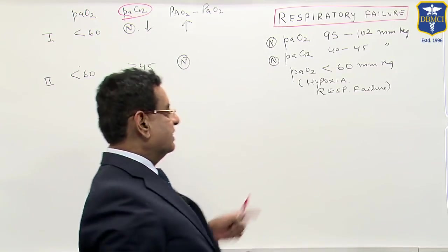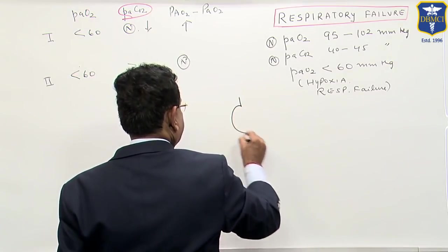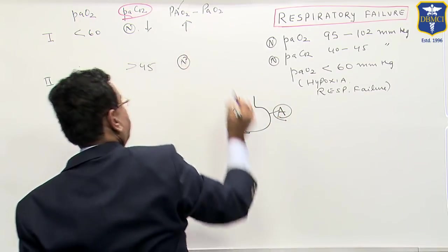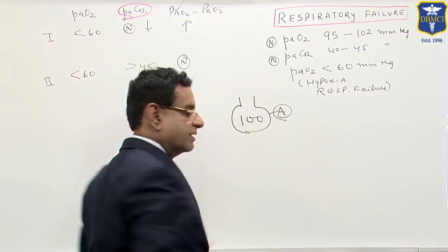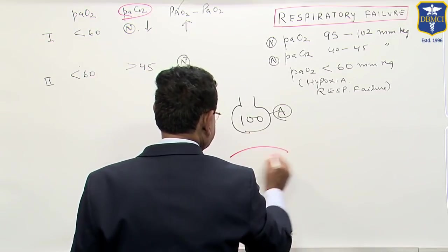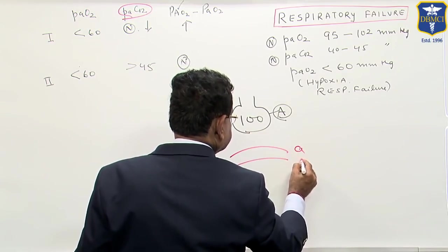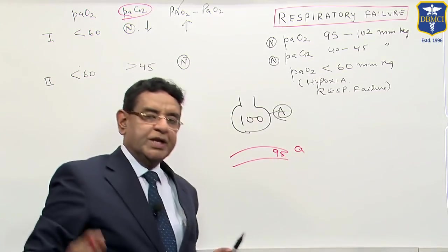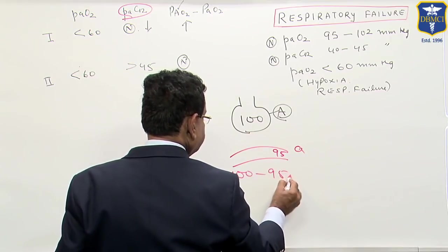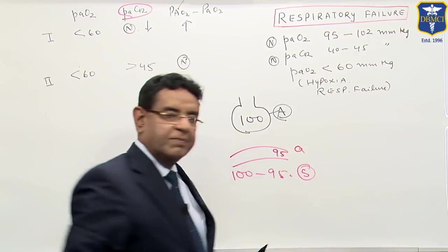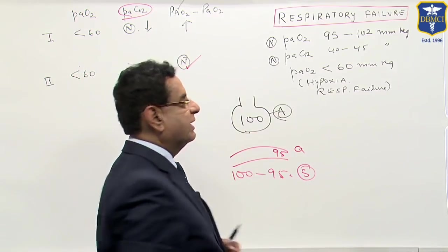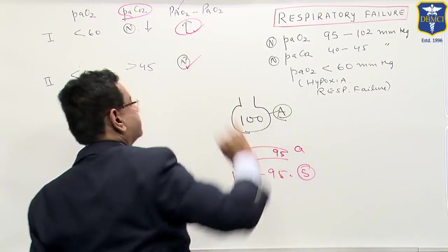Now, what is this? Let us learn the basic concept. Here is the alveolus A, partial pressure of oxygen is 100 mm of mercury. This is arteriole A and partial pressure is 100 minus 95 in normal person. So gradient is 100 minus 95 is 5 mm of mercury. This gradient is normal in type 2 and this gradient is much increased in type 1.